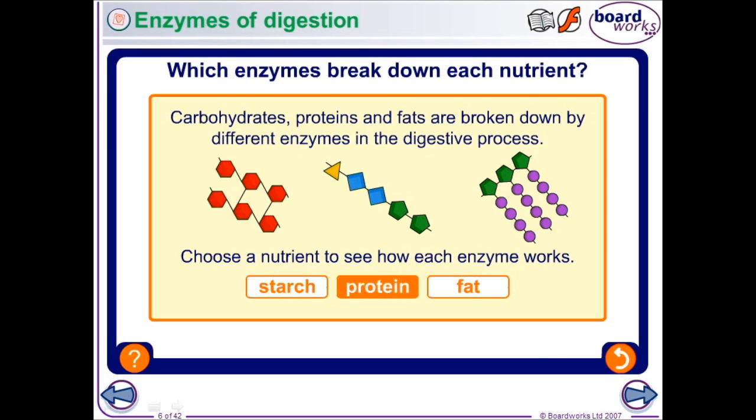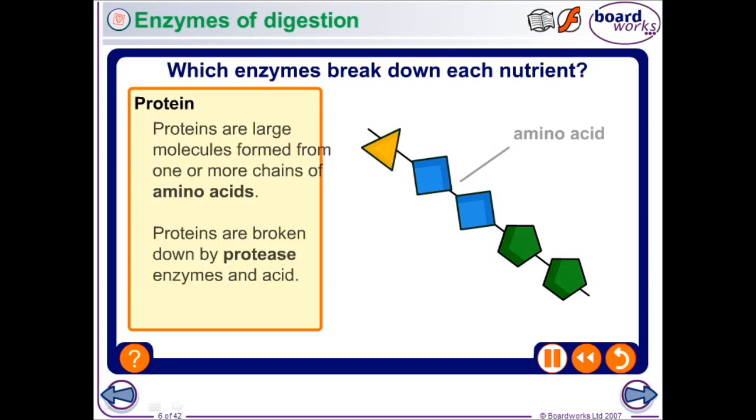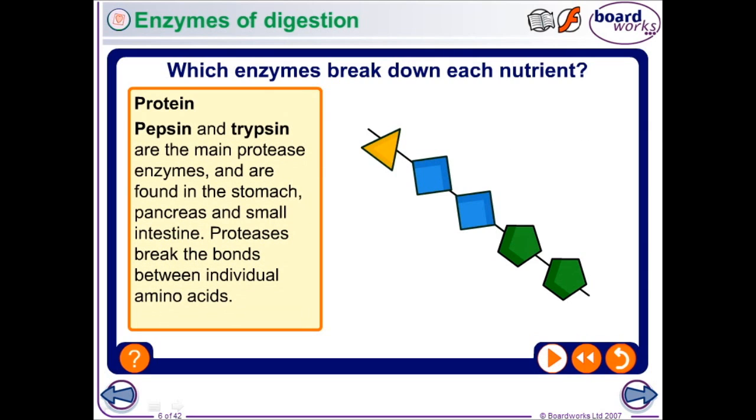Next we'll have a quick look at proteins. Now proteins are big long chains of little molecules called amino acids. Now different proteins are made up of different amino acids in different orders. Therefore we need loads of enzymes to help us break down the different proteins. This family of enzymes are called proteases. Now two specific members of the protease family are called pepsin and trypsin and you may well come across these two enzymes in your studies.